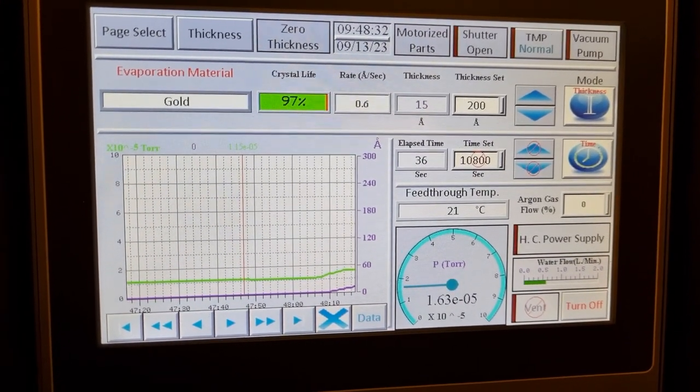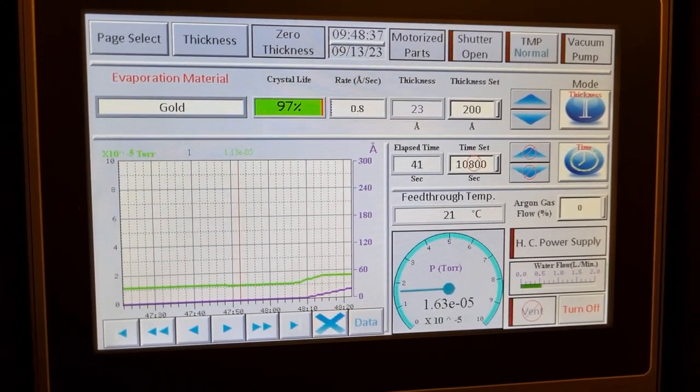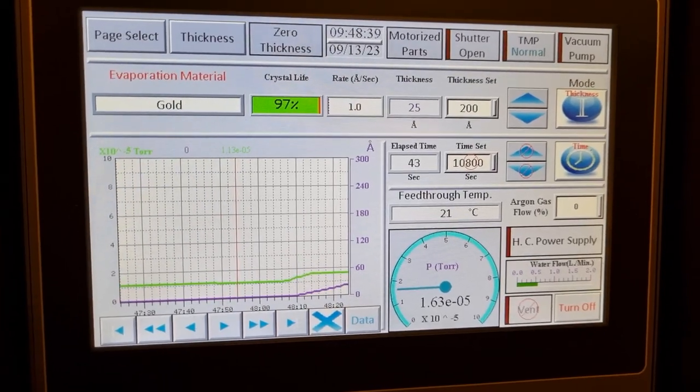We're at 10 angstrom. Remember that an angstrom is 1 tenth of a nanometer. And we have a rate. That rate will continue to increase a little bit as temperature builds up in the system.